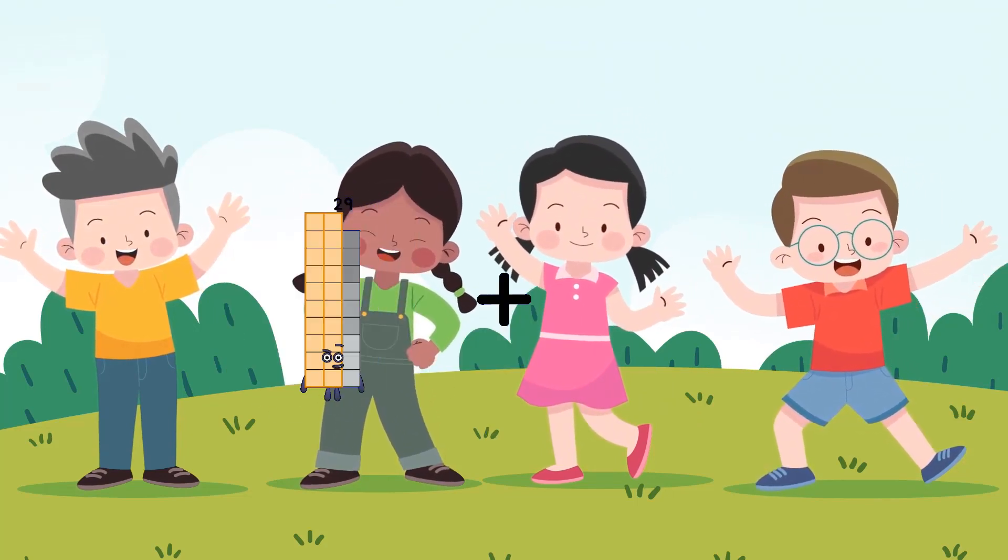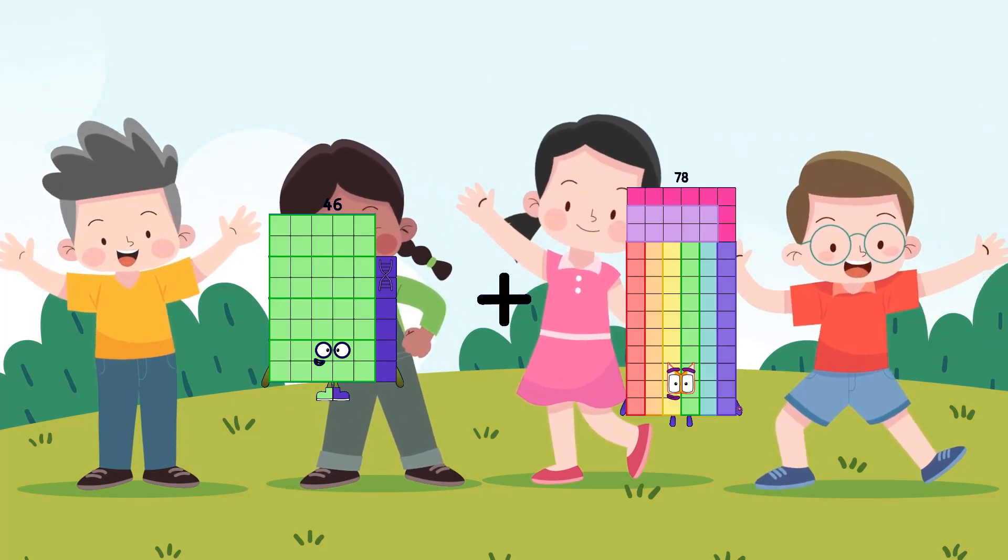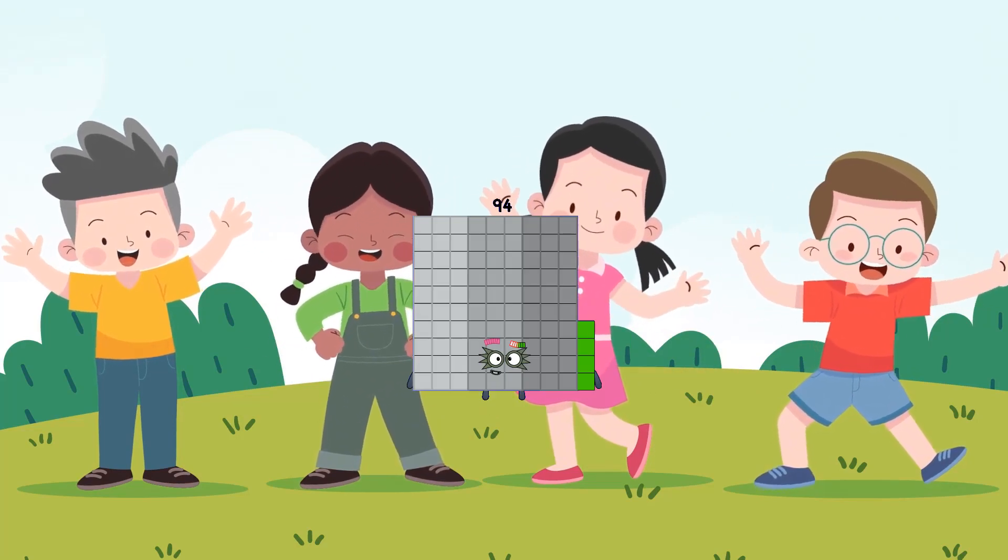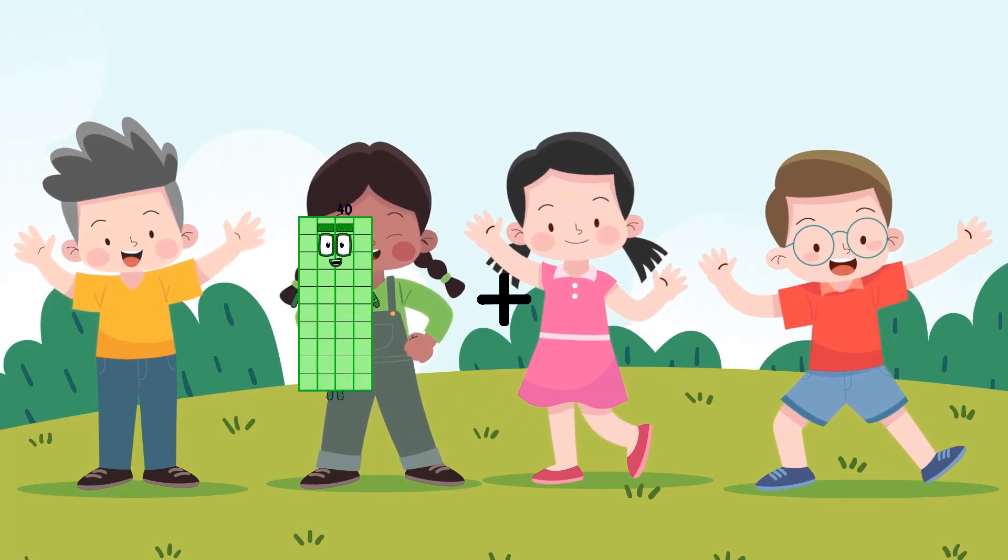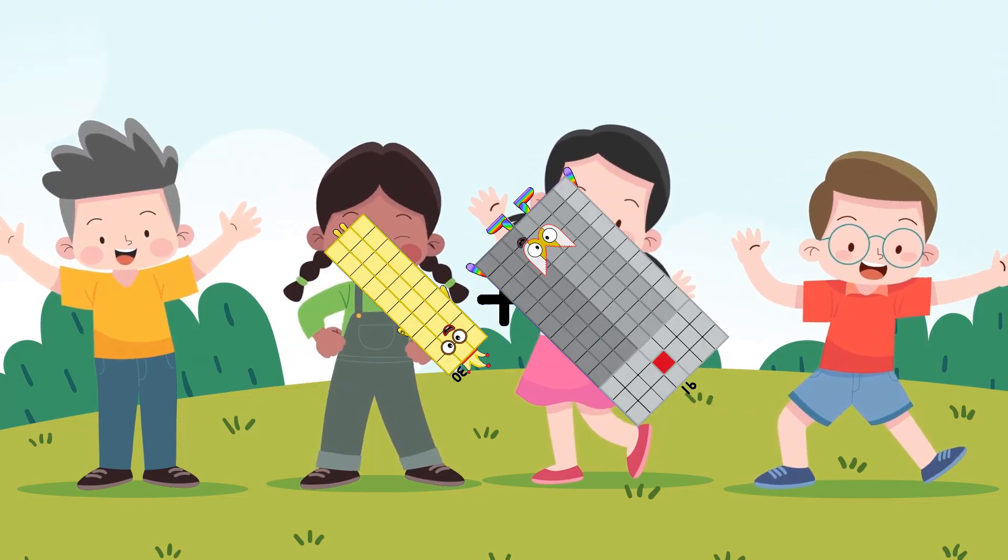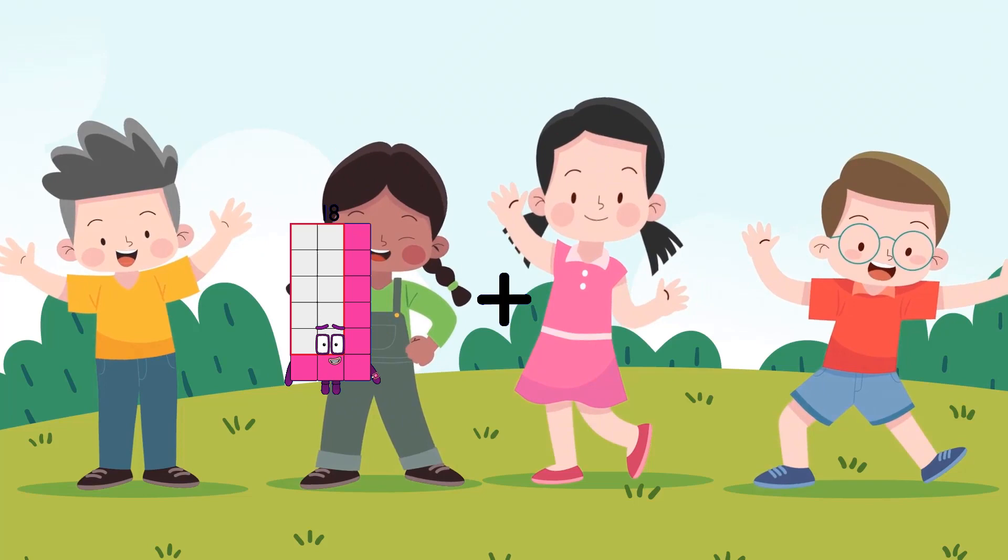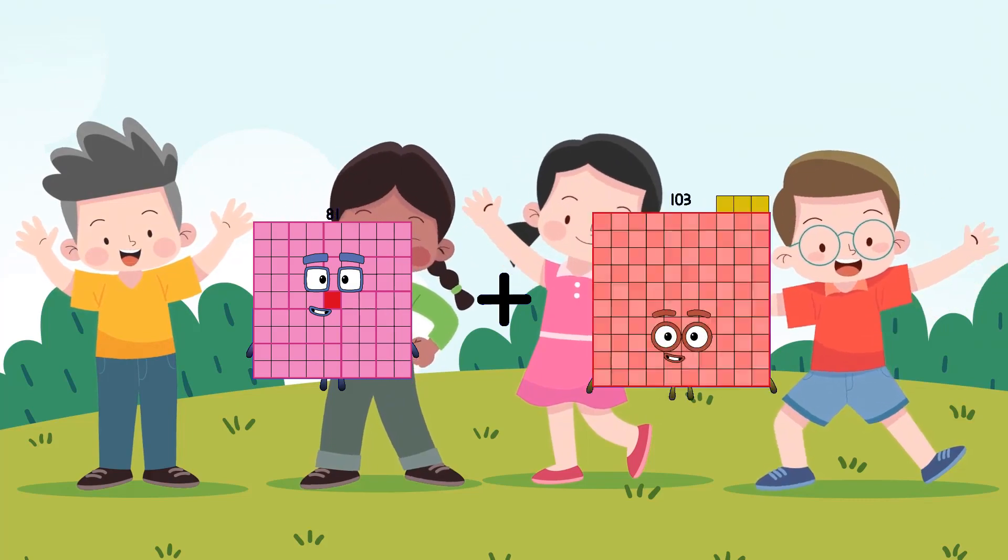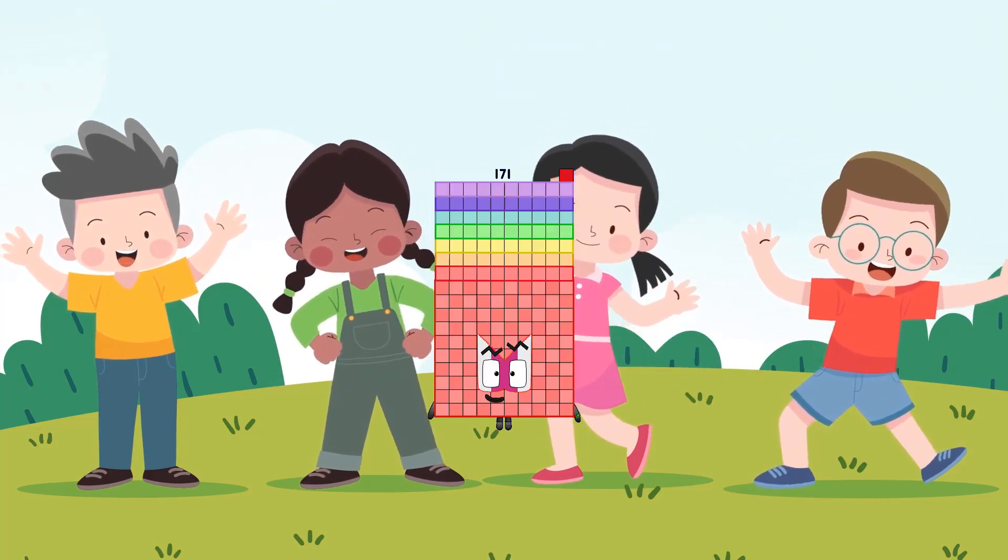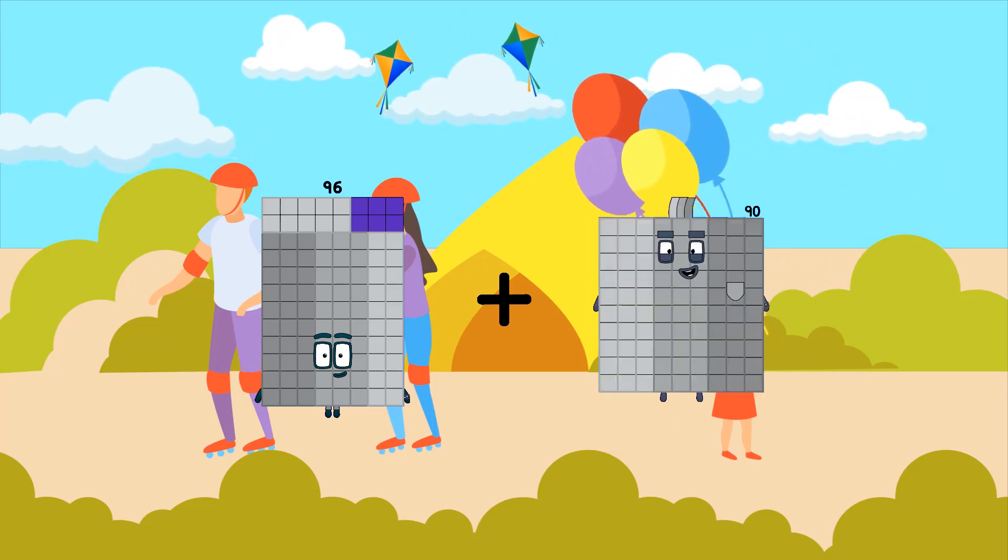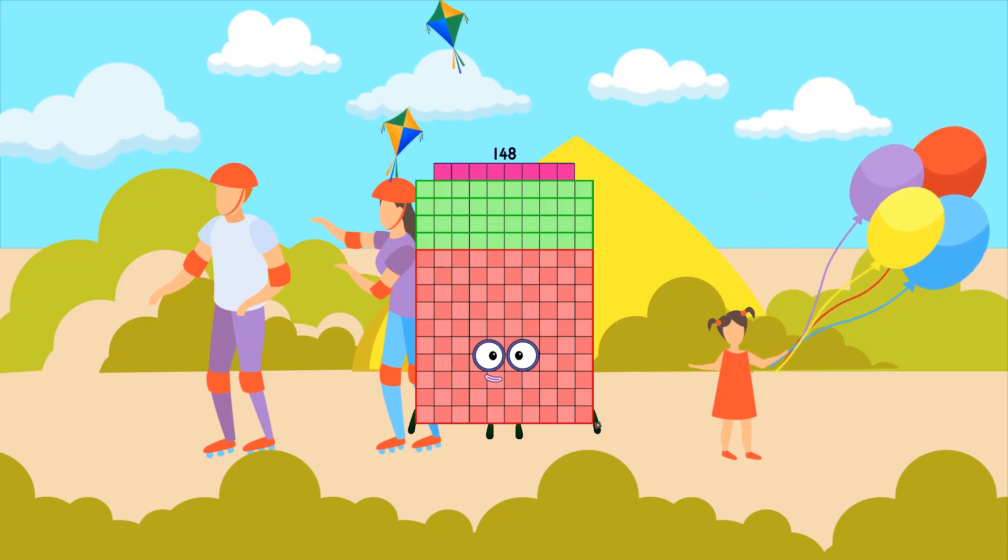46 plus 48 equals 94, 30 plus 91 equals 121, 81 plus 90 equals 171, 96 plus 52 equals 148.